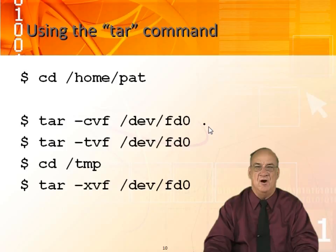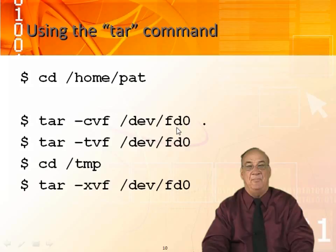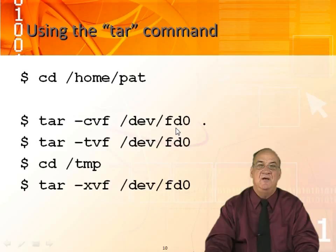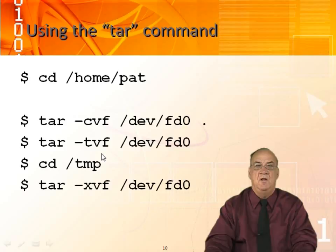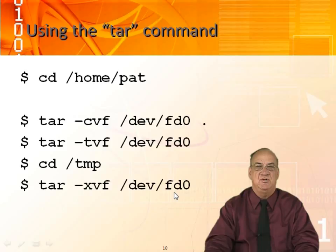Dot means current directory, or 'here' in this context, because you can only recover back to the original location — if you back up here, you can recover to here. The author here created a TAR file on a floppy, using devfd0, which happens to be the floppy drive; this could have been a flash drive or, if nothing is specified, it would assume the default tape drive. He then did a TAR minus tvf to see what files are included on this floppy — what's in that TAR file, the table of contents. Lastly, he changed to the temp directory and did a TAR minus x to extract. Notice you don't get a choice of where to extract to — it always extracts back to its original location.